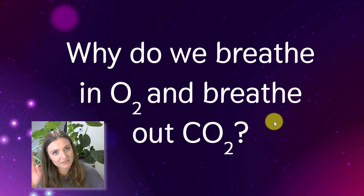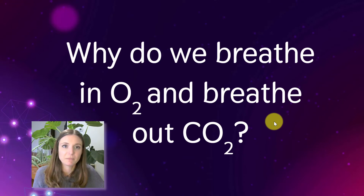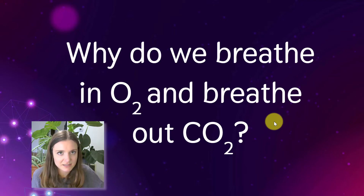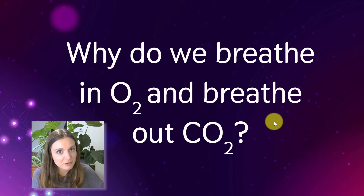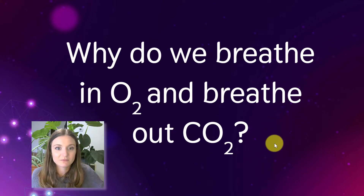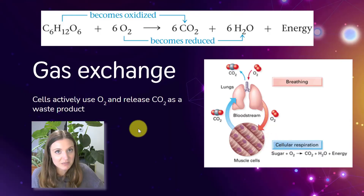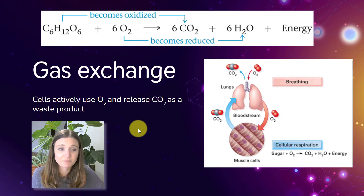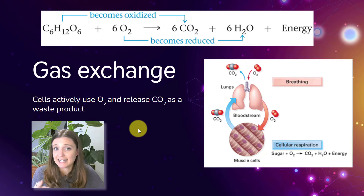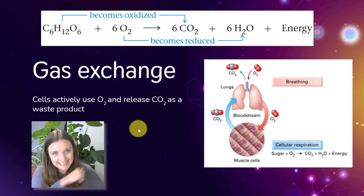We can eat lots of different things and eventually get some ATP out of them. This also explains why we breathe in oxygen and breathe out CO2. We saw oxygen being used up in the electron transport chain as the final electron acceptor, and carbon dioxide is produced as we move pyruvate into the mitochondria and during the citric acid cycle.